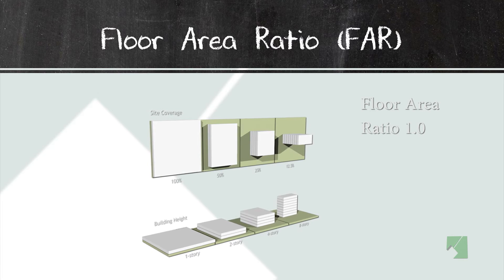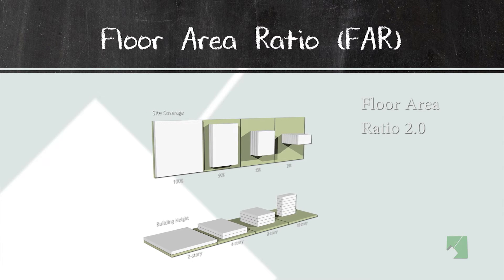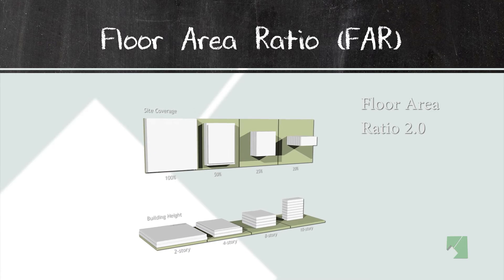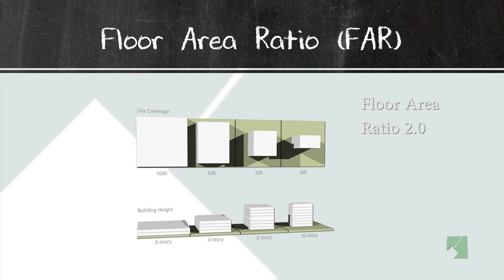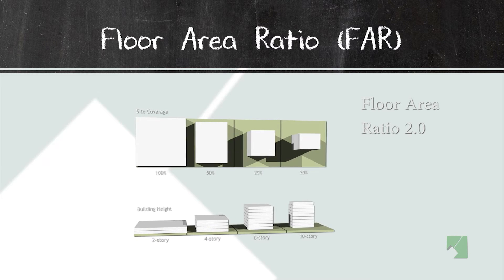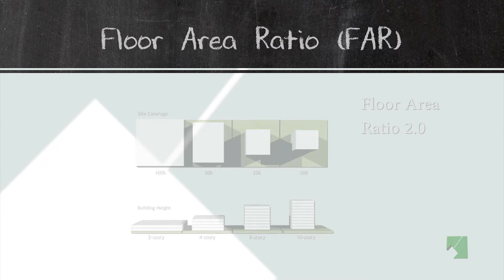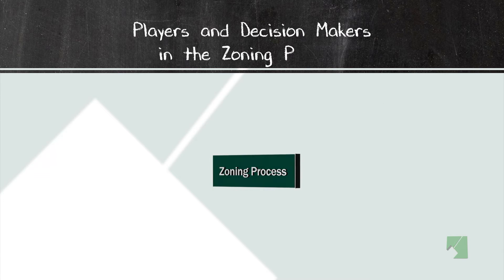As you can see from the graphic, as you get a smaller footprint of the building, the building gets taller. The players and decision makers in the zoning process are very involved in different aspects of zoning. We have the district council, the zoning hearing examiner, the planning board, the board of appeals, and the people zoning council.